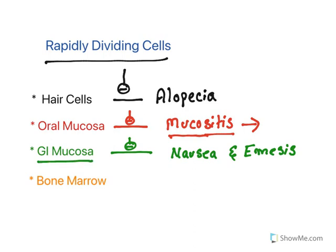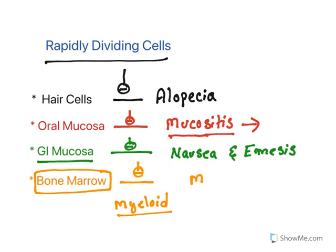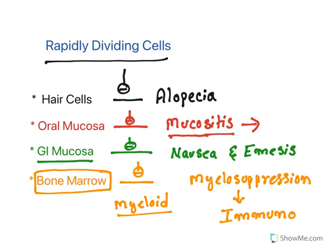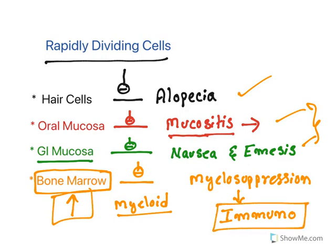The most important effect is on bone marrow. Bone marrow contains myeloid cells, which are progenitors for all blood cells, and bone marrow is under continuous multiplication. When this is inhibited it results in myelosuppression. Myelosuppression leads to immunosuppression — decreased immunity — which is a major problem because alopecia and mucositis can be tolerated, but bone marrow suppression causes immunosuppression leading to opportunistic infections, which are infections that affect the body when immunity is reduced.